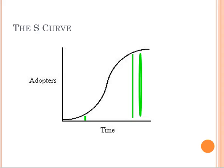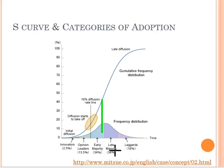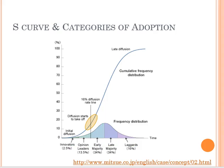If we take the s-curve of adoption and layer it over the categories of adoption, we can see where those numbers tend to fall out. We're trying to get as many early majority people to adopt as possible. The idea is to move people from the innovator end to the laggard end as fast as we can — shrinking the s-curve means spending less time in adoption and hopefully having more adopters faster.